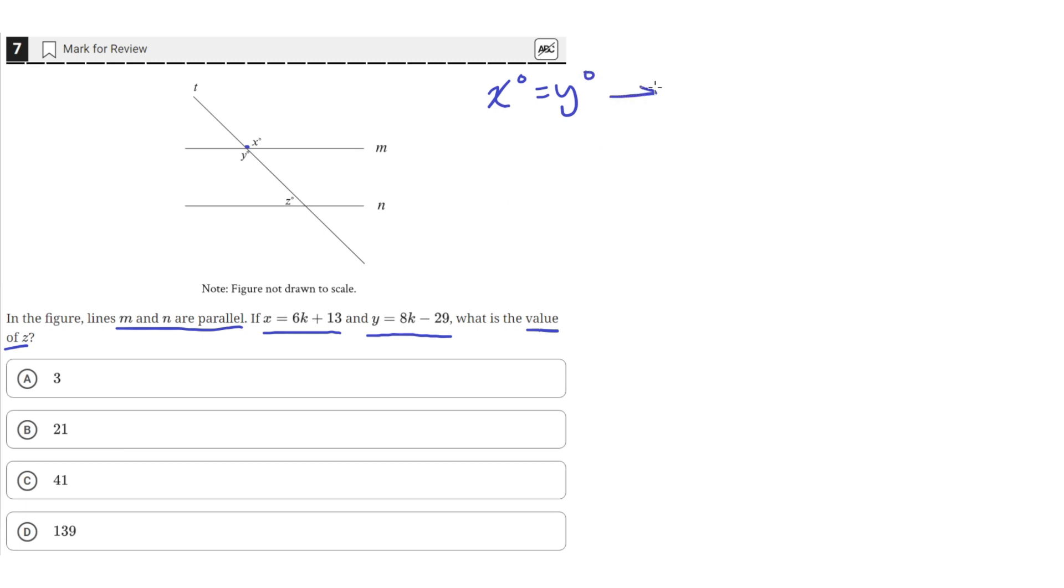Which means that 6K plus 13 is equal to 8K minus 29, since this is the equation for X and this is the equation for Y.